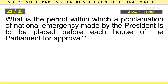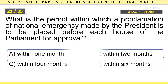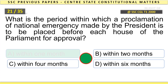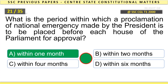What is the period within which a proclamation of national emergency made by the President is to be placed before each House of the Parliament for approval? Within one month.